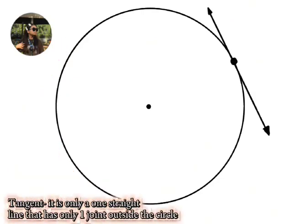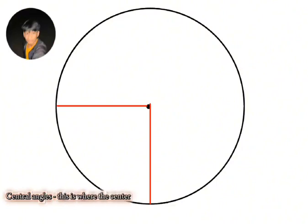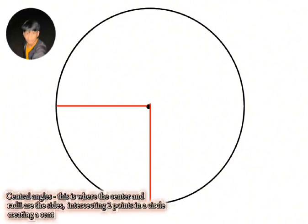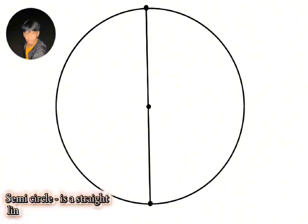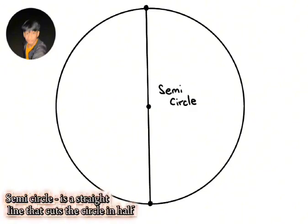Tangent. It is a straight line that has only one point of contact outside the circle. Central angle. This is where the center and radii are the sides, intersecting two points in a circle and creating a central angle. Semicircle. It is a straight line that cuts the circle in half.